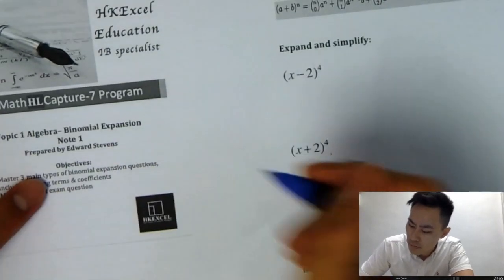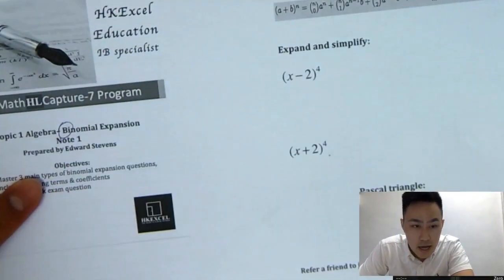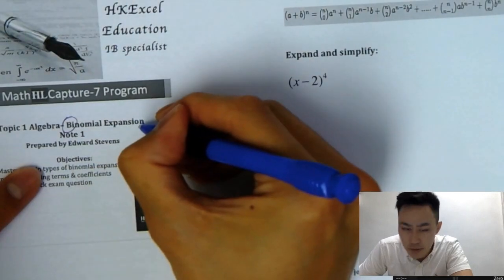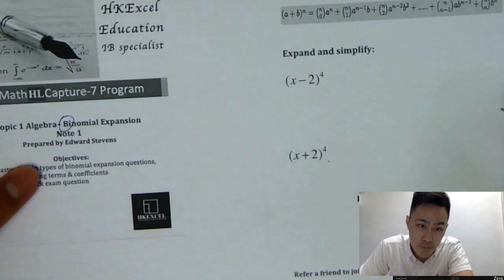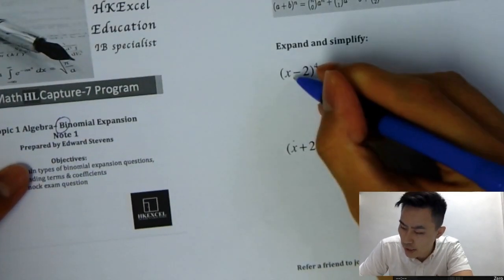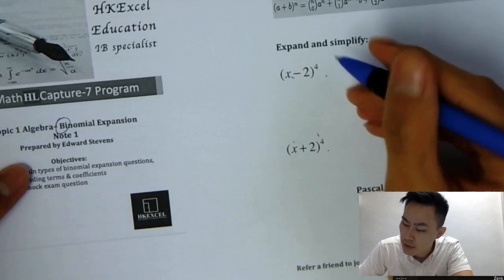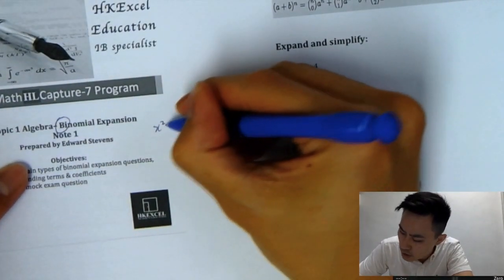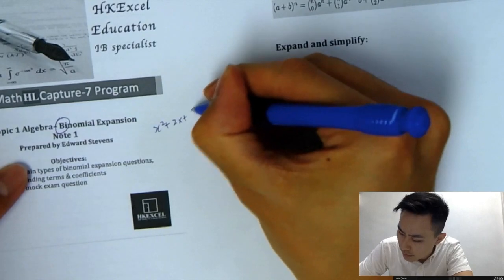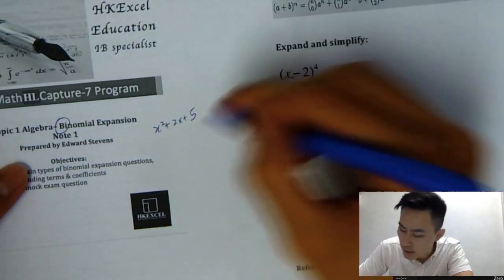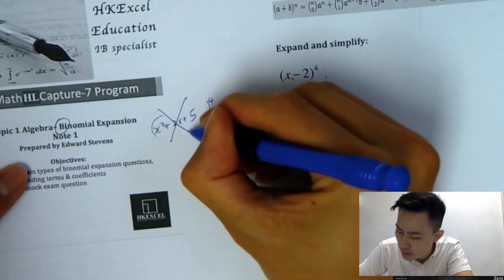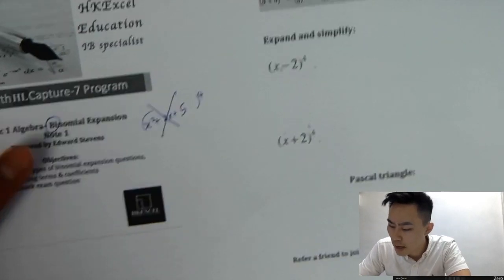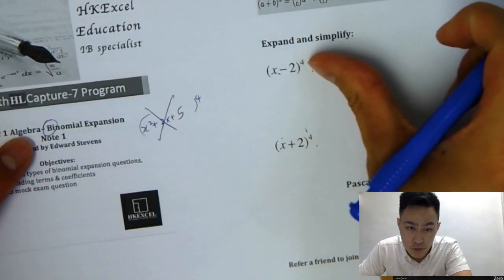So what does it mean by binomial expansion? 'Bi' means two things — you can only apply the techniques of binomial expansion for two-term expressions. For example, x plus 2, or x minus 2 — these are two terms. If I give you x squared plus 2x plus 5 to the power of 4, you cannot use binomial expansion. Binomial expansion only applies for two terms.